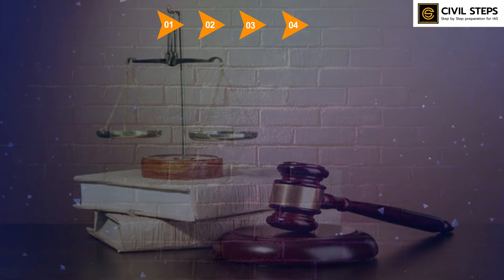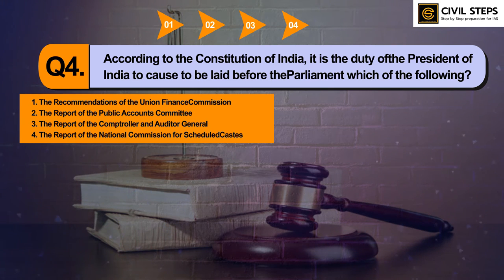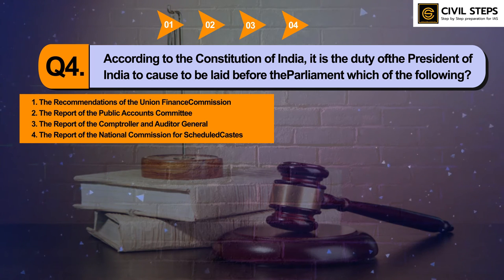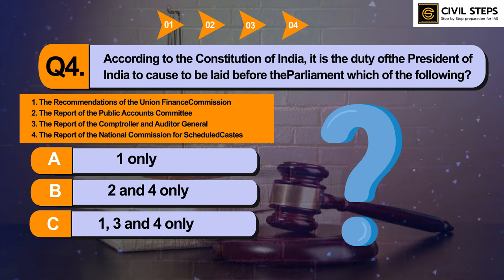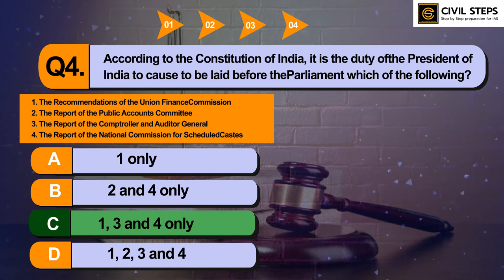Question number four: according to the Constitution of India, it is the duty of the President of India to cause to be laid before Parliament which of the following? First, the recommendations of the Union Finance Commission. Second, the report of the Public Accounts Committee. Third, the report of the Controller and Auditor General. Fourth, the report of the National Commission for Scheduled Castes. Option A: one only. Option B: two and four only. Option C: one, three and four only. Option D: one, two, three and four. The answer is Option C: one, three and four only.